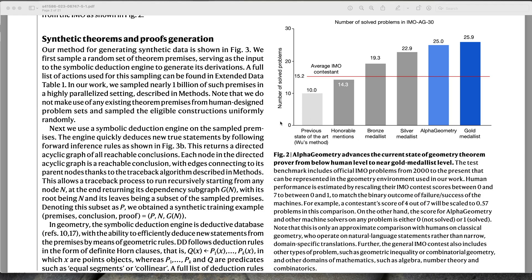Let's just jump straight into the results. They looked at 30 math Olympiad problems from 2000 until 2022, and the y-axis shows you how many problems were successfully solved.